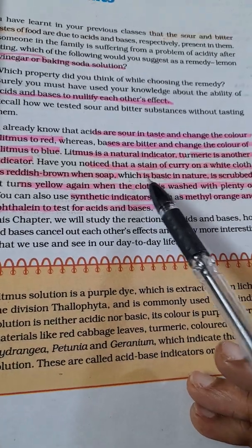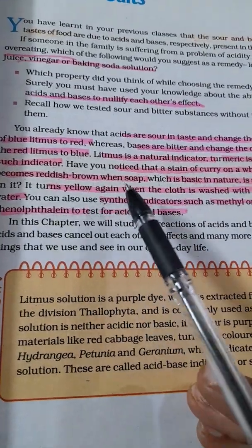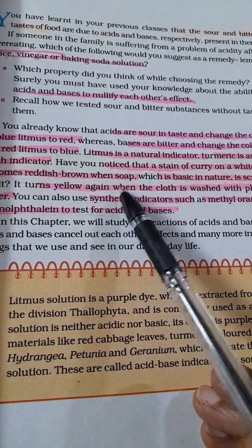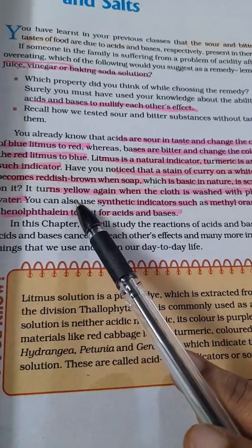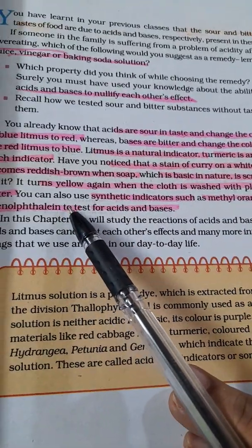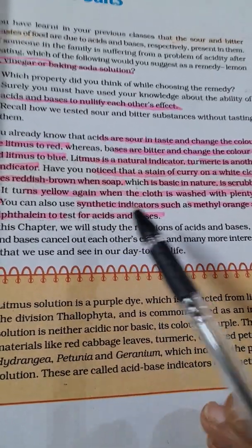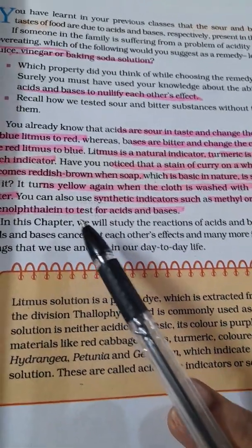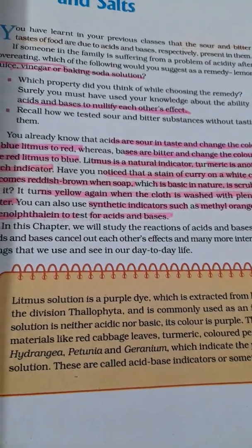If some curry falls on a white cloth you are wearing, it becomes reddish-brown when rubbed with soap, which is basic in nature. It turns yellow again when the cloth is washed with plenty of water. You can also use synthetic indicators — man-made indicators like methyl orange and phenolphthalein, which are the most commonly used indicators to test for acids and bases. You can find them in your chemistry lab.